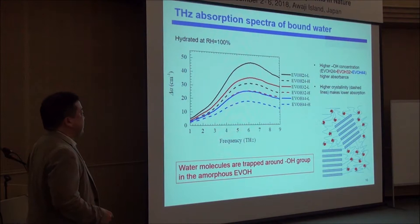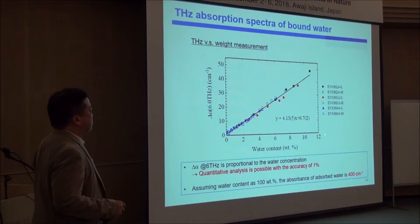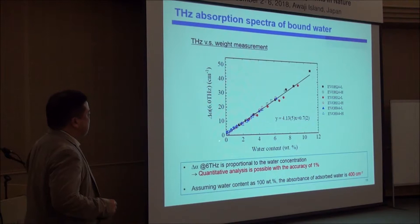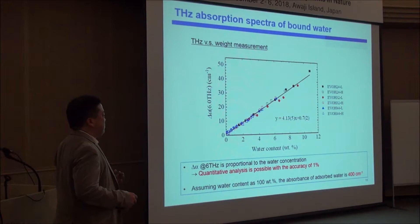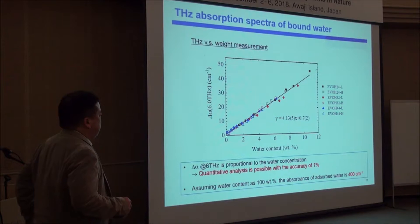We also measured the weight of the samples so we could determine how much water is contained. The terahertz absorption is basically proportional to the terahertz intensity. So we can plot this relationship and use it to quantitatively assign how much water is in the polymer. If we take the water content to 100% — pure liquid water — the absorption coefficient comes to about 400 cm⁻¹. This value is used in the next slide.